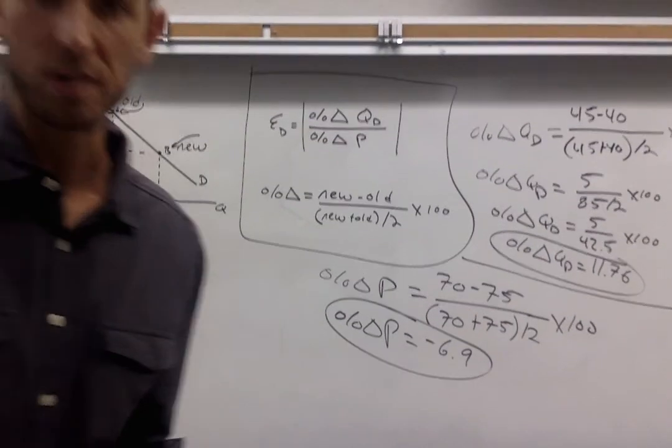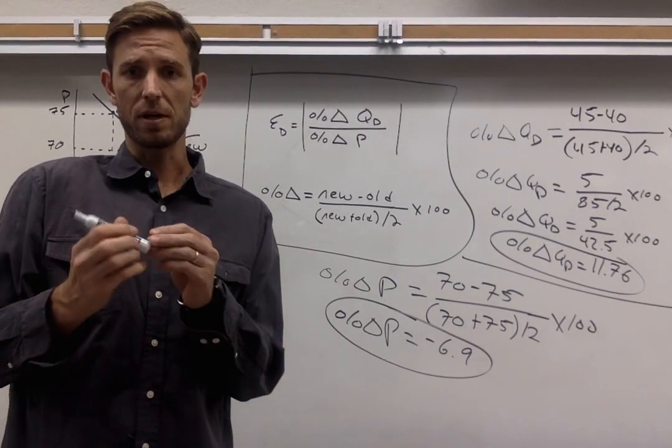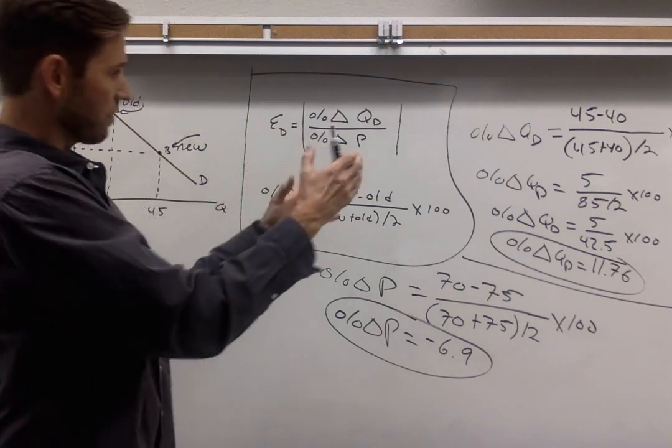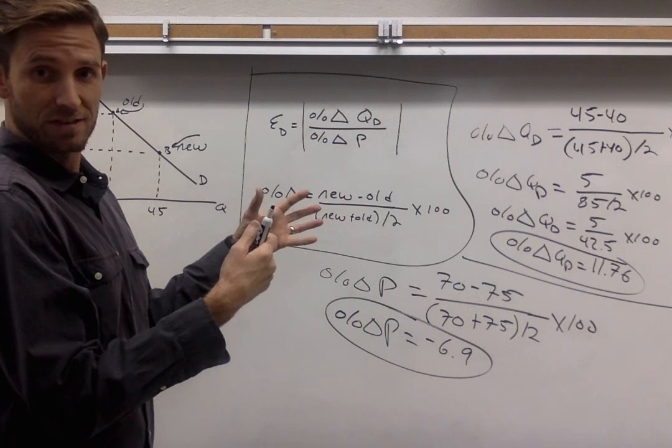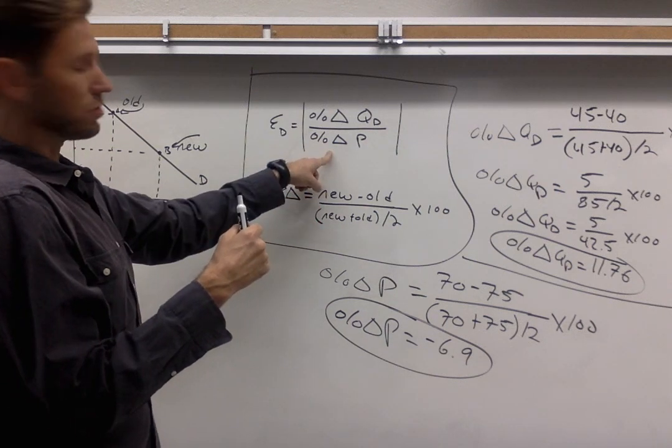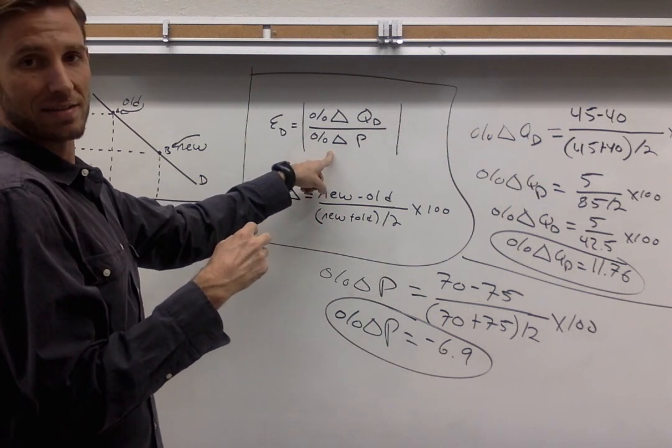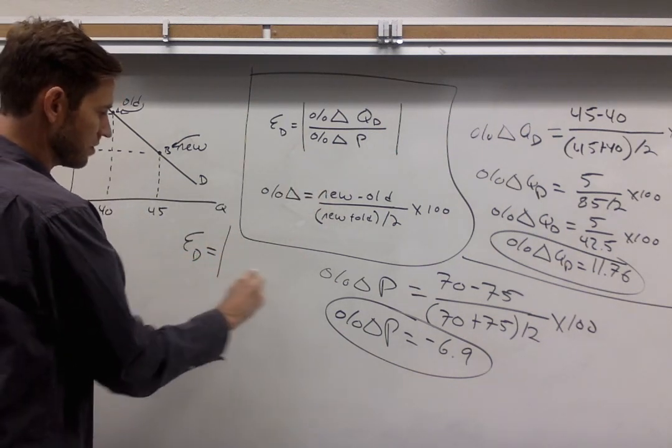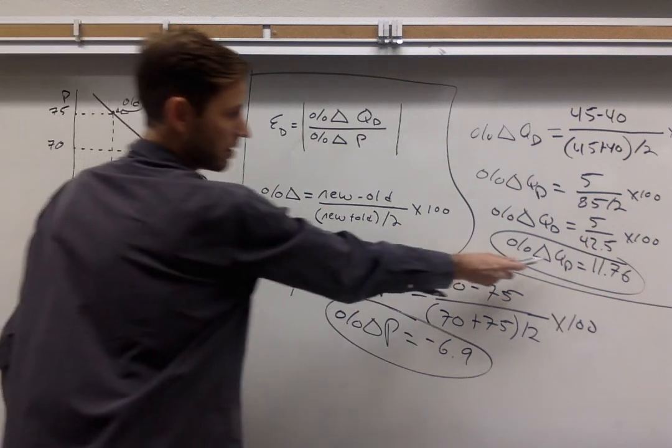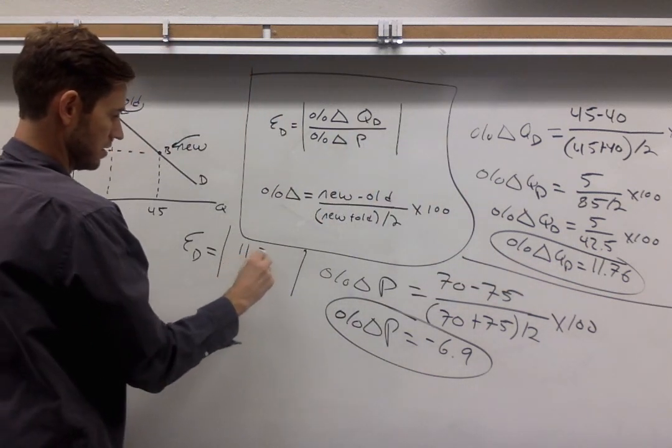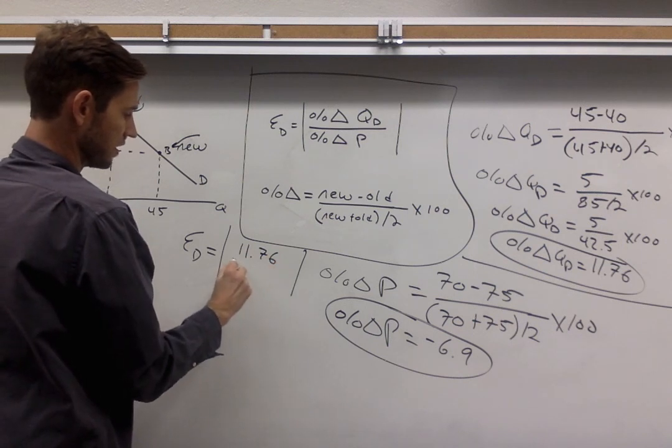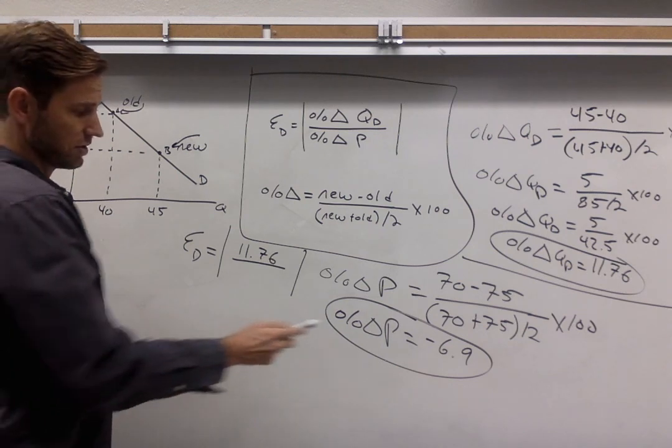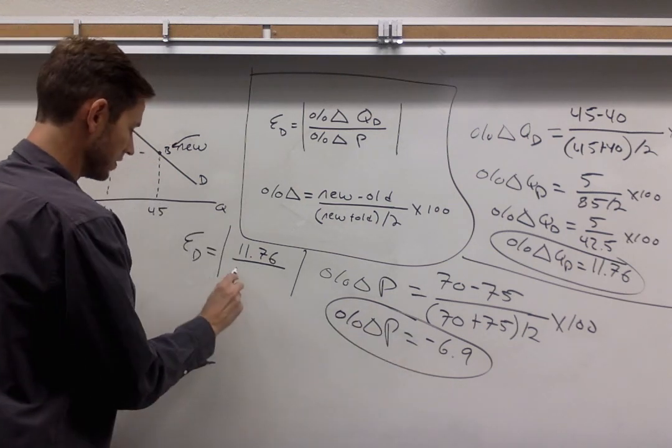Okay, we're almost done. Last step here for calculating price elasticity of demand is to take those two percentage changes that we've identified and put them into this larger formula for elasticity of demand. Let's do that right here. Price elasticity of demand in this case would be the absolute value of 11.76, that's going to go right there, divided by the percentage change in the price, negative 6.9.